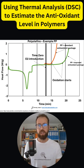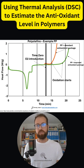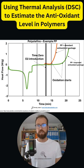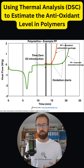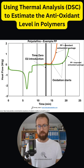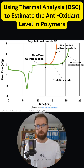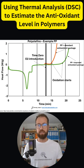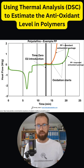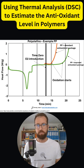Whereas with the improved antioxidant package, we have up to six minutes. This is a good improvement because when you think of processing polypropylene, this is also where antioxidants are already used up.